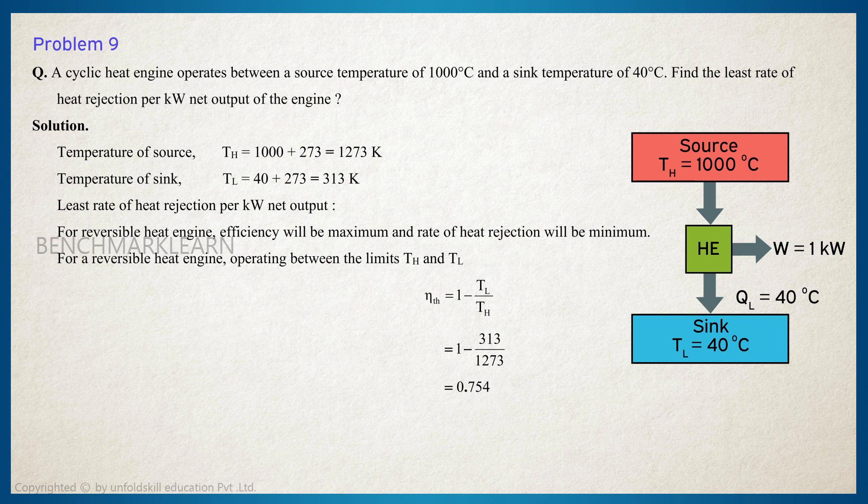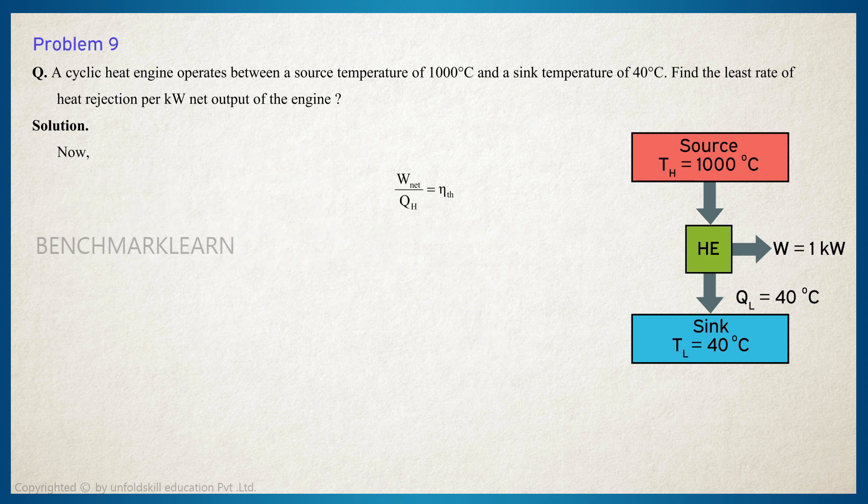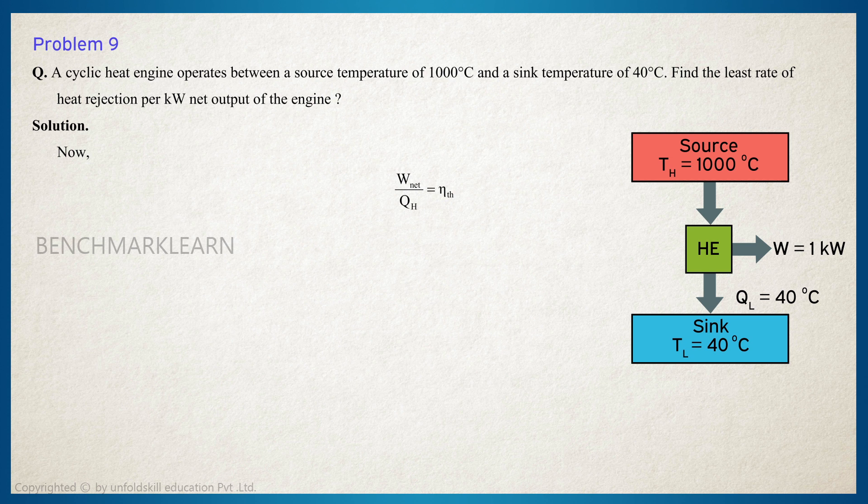Now, W net by QH is equal to maximum efficiency. Therefore, QH is equal to W net by 0.754, which is equal to 1.326.